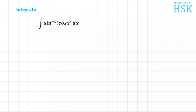In this question I have to integrate sine inverse of cos of x. So to integrate this, what I do here is I write cos x as sine of pi by 2 minus x.